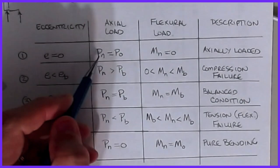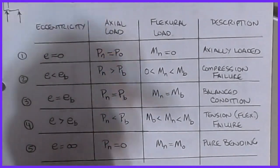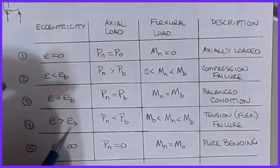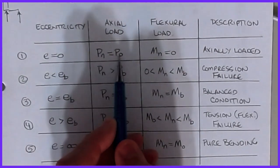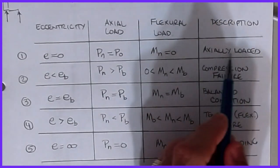We talked about that in the last video and we'll bring that back around here in a couple minutes, how we calculate that particular value. For this first case, Mₙ is equal to zero. This is what we call the pure axially loaded situation.